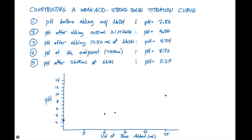Then when we add 26.0 milliliters of sodium hydroxide, our pH is 11.29, which corresponds to this point in the graph. So here's our particular titration curve.